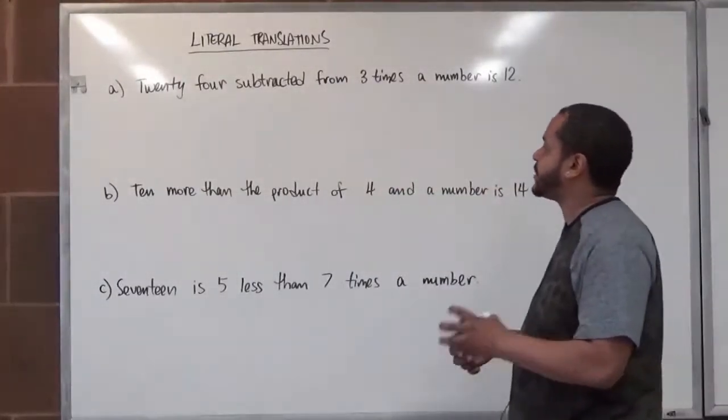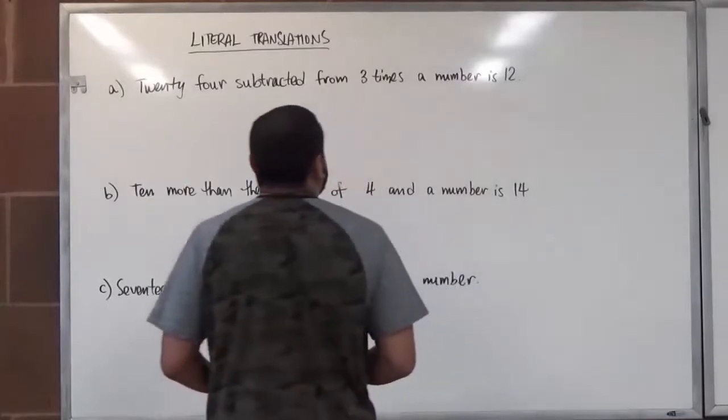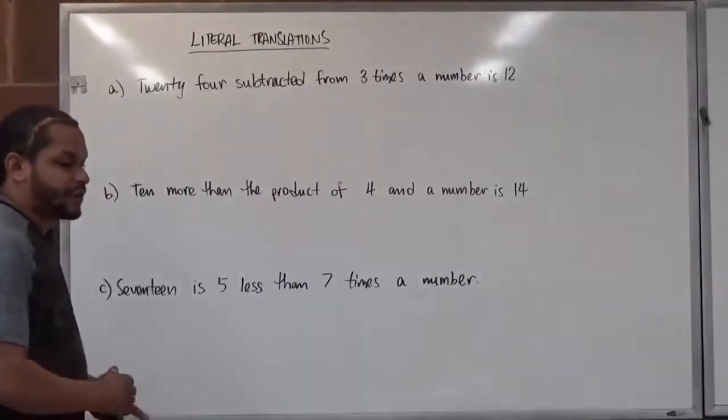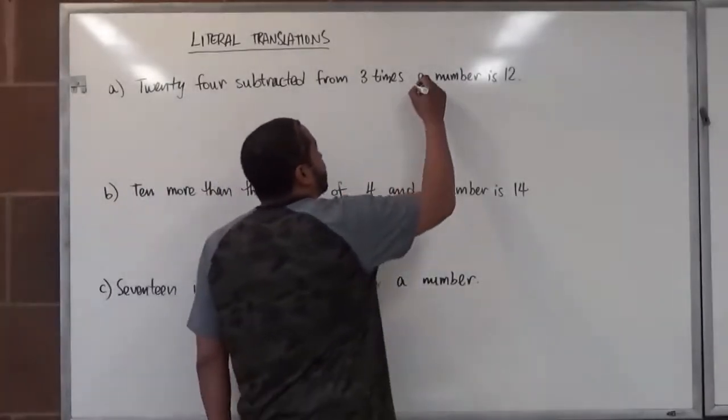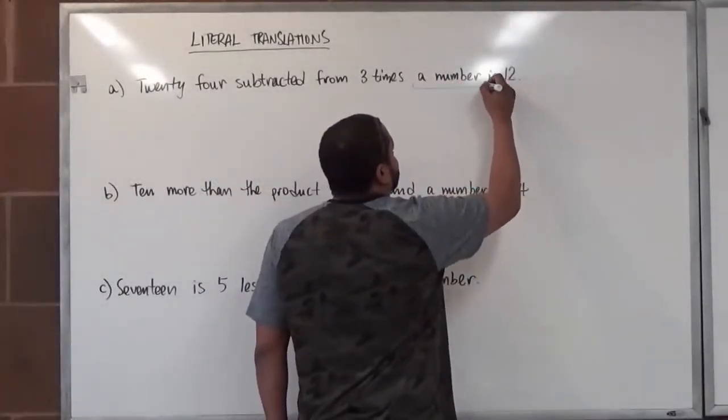We have 24 subtracted from 3 times a number is 12. What we want to do for this kind of problem is specifically for the word 'a number,' we're going to use the letter n.